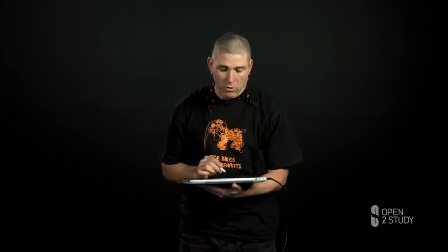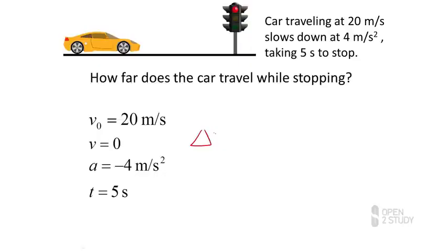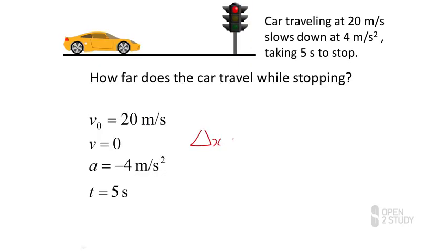We can use our new equation of motion straight away. We know that our change in displacement is going to be our initial velocity multiplied by time, plus one-half the acceleration times the time squared. Now let's put our numbers in.